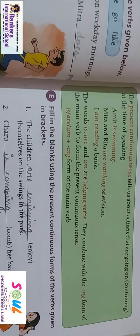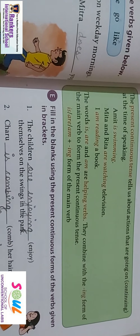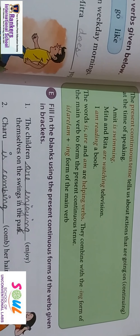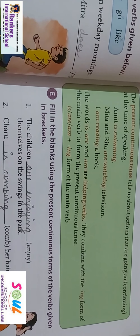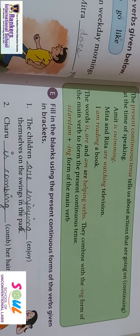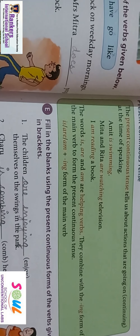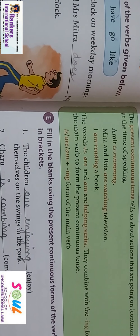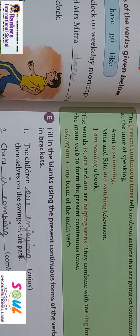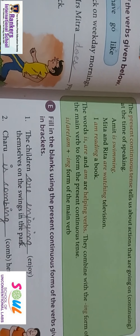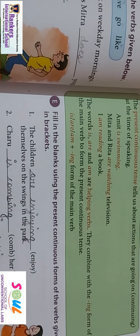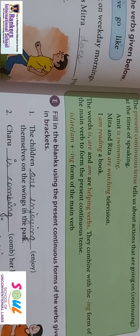For example, I am reading a book — main kitab padh raha hun. So the action has not completed yet, it is still going on. The words 'is', 'are', and 'am' are helping verbs. They combine with the ing form of the main verb to form the present continuous tense.